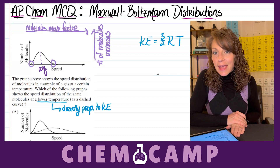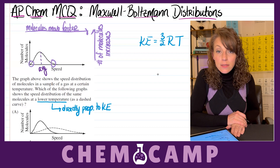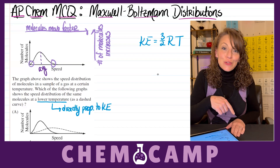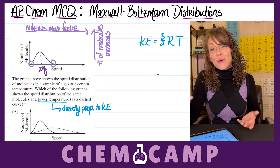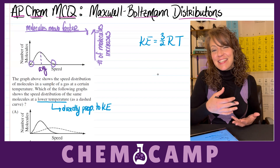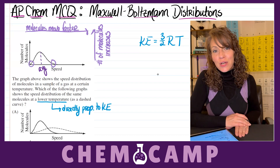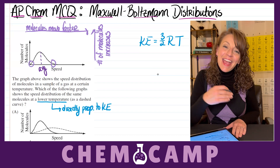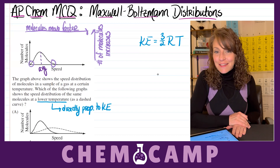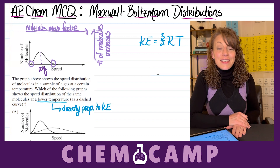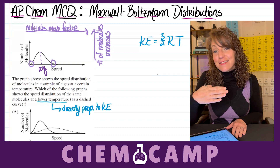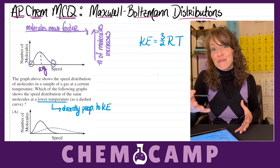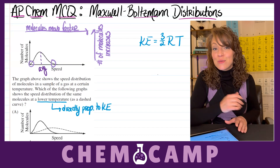Where R is your gas constant and T is temperature in Kelvin. Since the 3/2 and R are both constants, kinetic energy depends upon the temperature. So if temperature increases on the Kelvin scale, kinetic energy will also increase — and vice versa. If the temperature on the Kelvin scale decreases, then the kinetic energy of the particles in that sample also decreases.